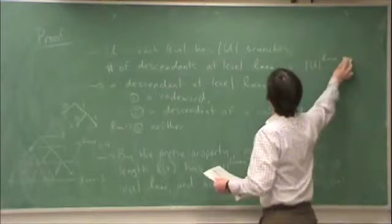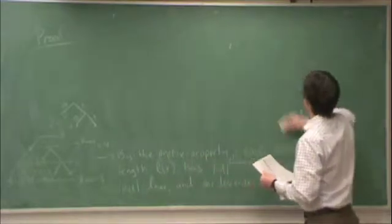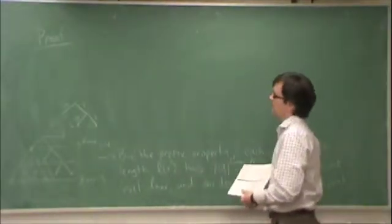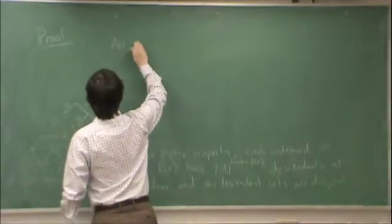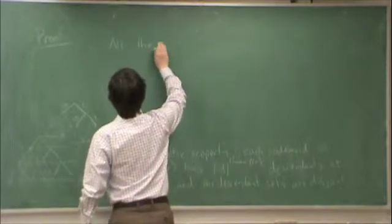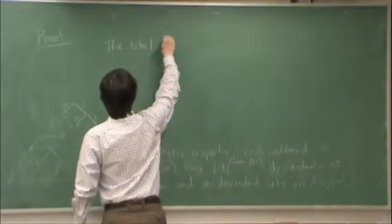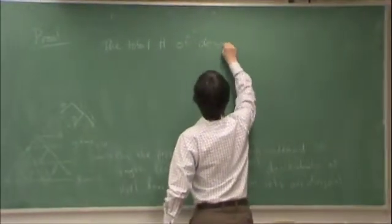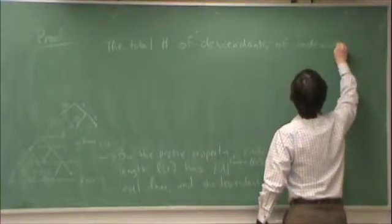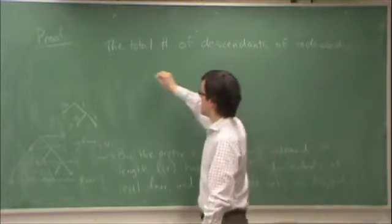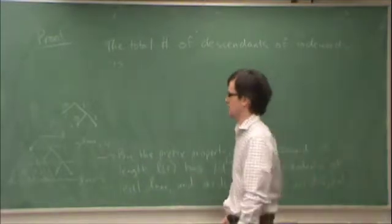So that's important for the following reason. The sum of all the descendants of codewords, so all the descendants of codewords for the total of descendants of codewords is, because they're disjoint, I can just add them up. In other words, there's no descendant that's descended from more than one codeword.